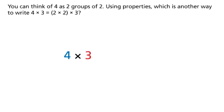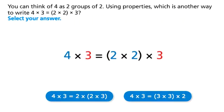You can think of 4 as two groups of 2. Using properties, which is another way to write 4 times 3 equals 2 times 2 times 3? Select your answer.